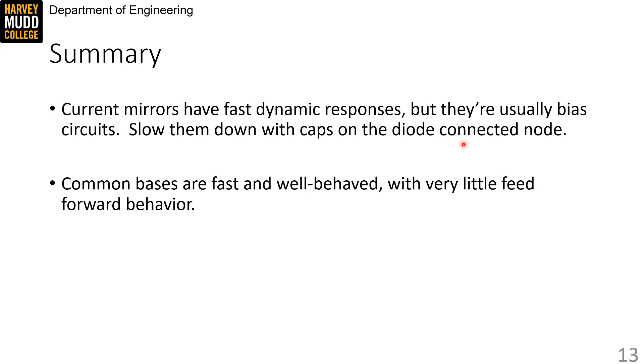So in summary, current mirrors have fast dynamic responses, but they're usually bias circuits, so we slow them down with caps on the diode-connected node. And common bases are fast and well-behaved, with very little feed forward behavior.